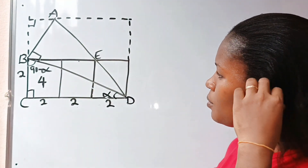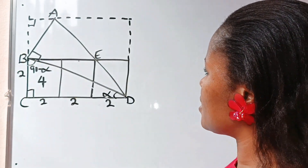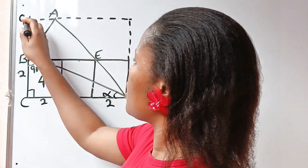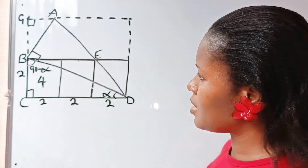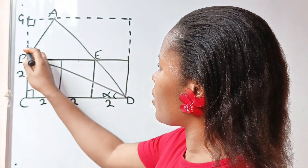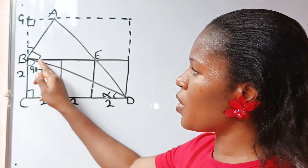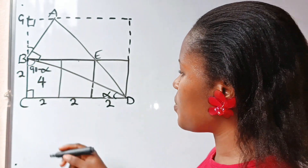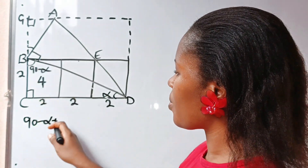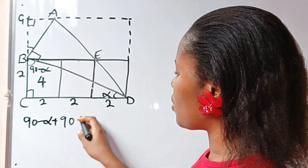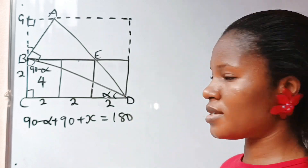Now, if we look at triangle AGB — let's call this point G — let us try to get this particular angle here. Remember that angle B is 180 degrees on a straight line. So it means that (90 minus alpha) plus 90 degrees plus X, the angle we are looking for, is equal to 180.